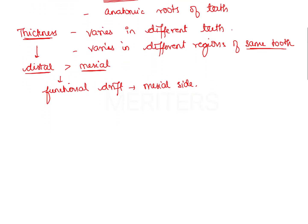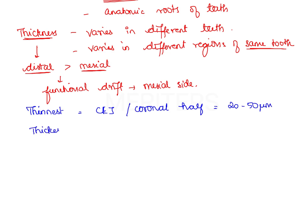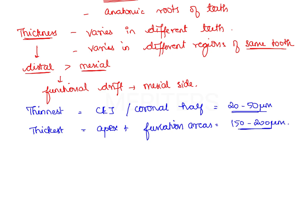Regarding cementum thickness in different regions of the same tooth, cementum is very thin at the level of the cemento-enamel junction (CEJ) — only about 20 to 50 micrometers. It is thickest towards the apex and in the furcation areas of molars, where the thickness is about 150 to 200 micrometers.